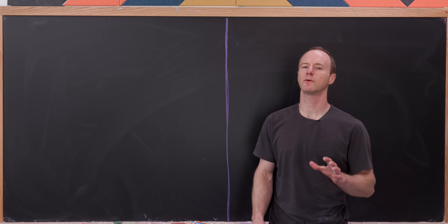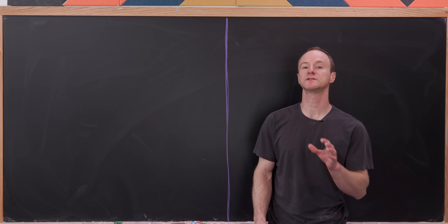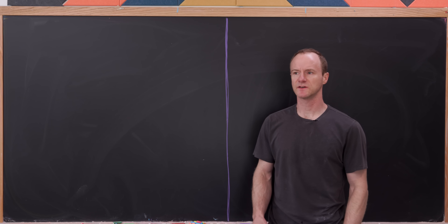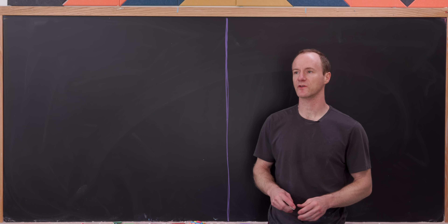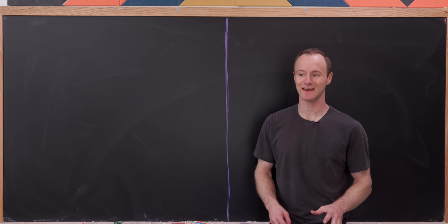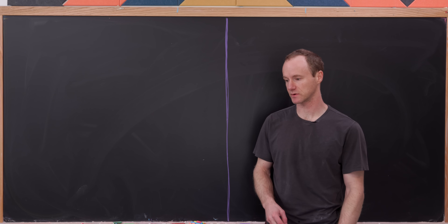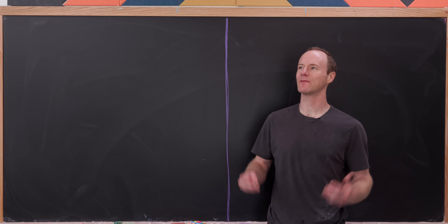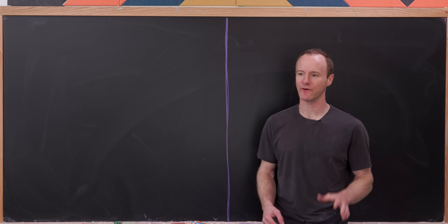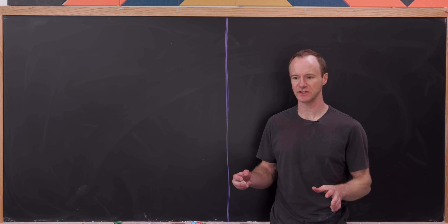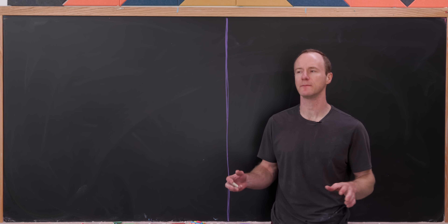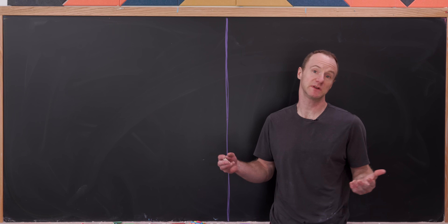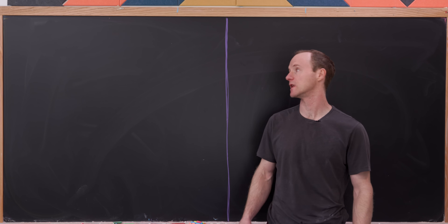Today we're going to look at what is probably the most absurd way to find the closed formula for the first n natural numbers. Why are we going to do this? It's a fun exercise and it allows us to use a tool that maybe not everyone knows about, but it's a useful tool nonetheless.